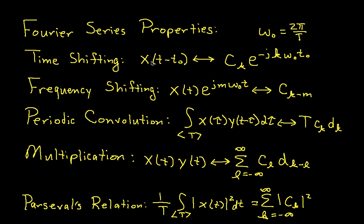We have time shifting, where if you shift something in time it shifts the Fourier series coefficients in frequency. Frequency shifting, where if you multiply by a complex exponential it shifts the Fourier coefficients. Periodic convolution, where if you convolve two signals in the time domain you multiply their Fourier series coefficients. Multiplication, where if you multiply two signals in the time domain you convolve their Fourier series coefficients. And Parseval's relation, which relates average power to the sum of the magnitude squared of the Fourier series coefficients.